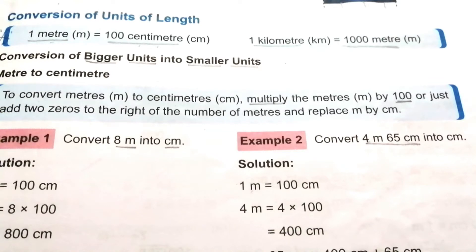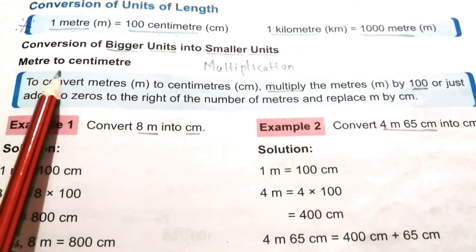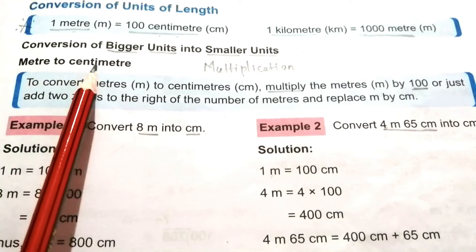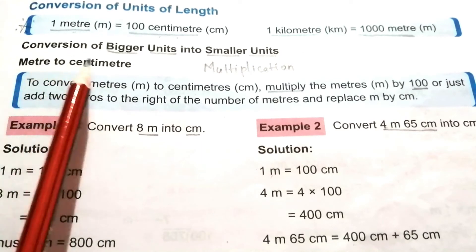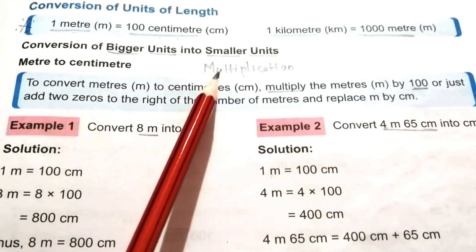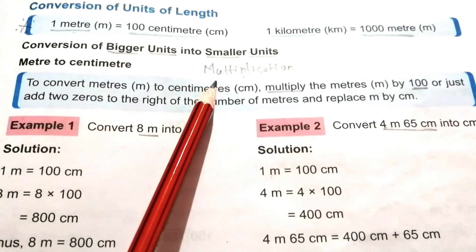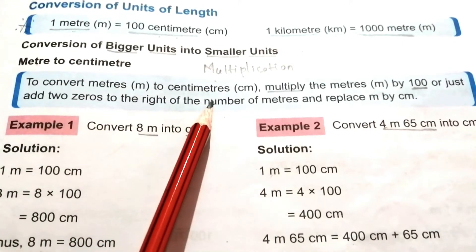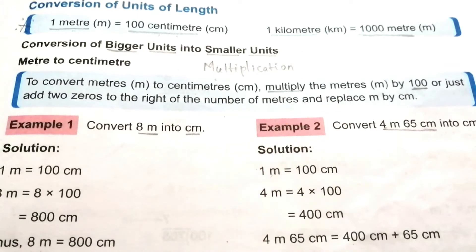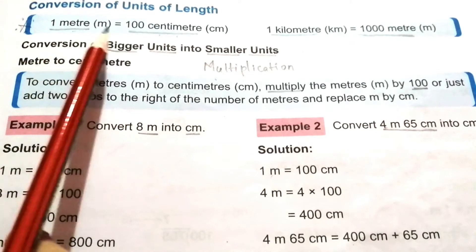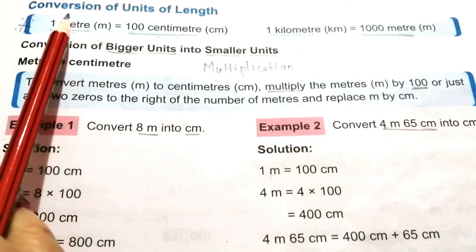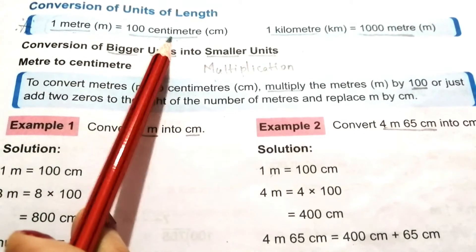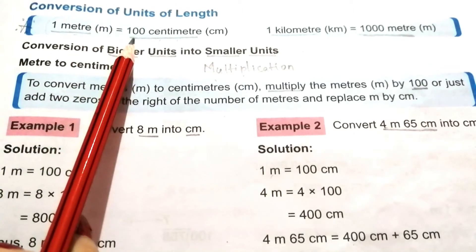Now, to convert a bigger unit into a smaller unit, we have to use the multiplication operation. For meter to centimeter: meter is the bigger unit and centimeter is the smaller unit, so we multiply by 100. The relationship is 1 meter equals 100 centimeters, so to convert meters into centimeters, multiply by 100.